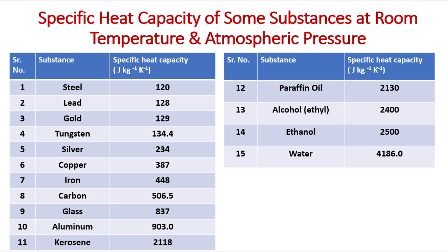Among liquids, kerosene has 2118 J/kg·K, paraffin oil has 2130, alcohol has 2400, ethanol has 2500, and water has the highest value at 4186.0 J/kg·K.